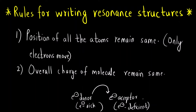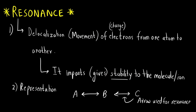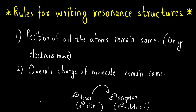To summarize: resonance is the delocalization or movement of electrons; we do resonance to impart stability to molecules or ions; it is represented by a double-headed arrow; the position of all atoms will remain the same; and the overall charge of the molecule remains the same.